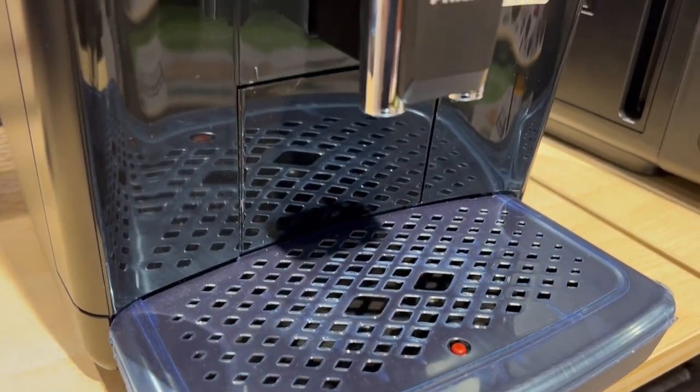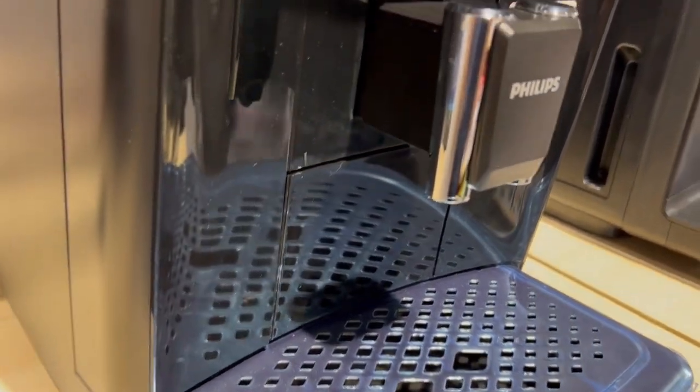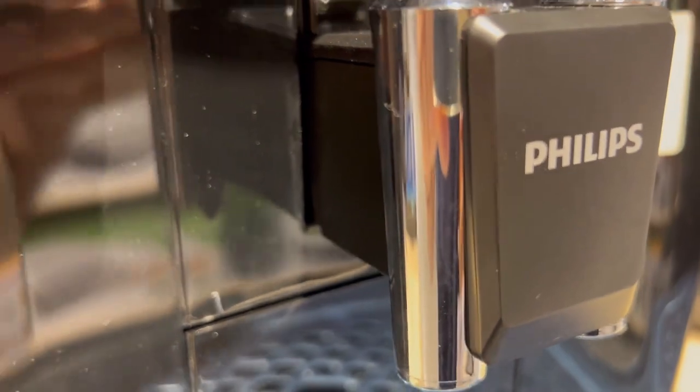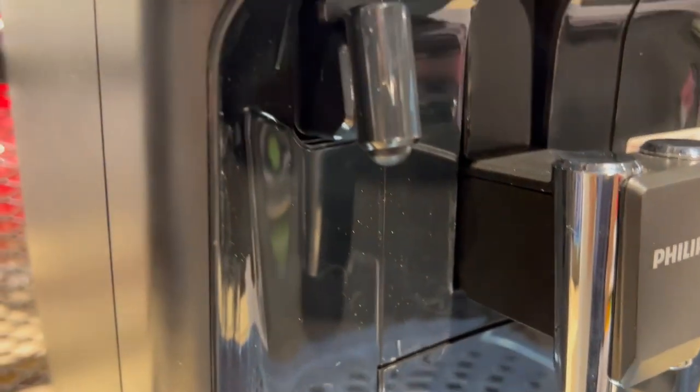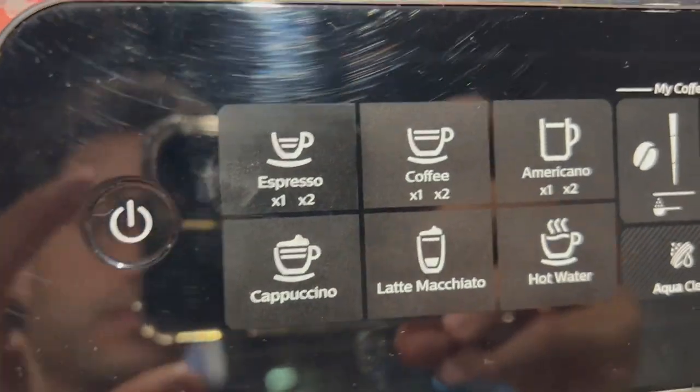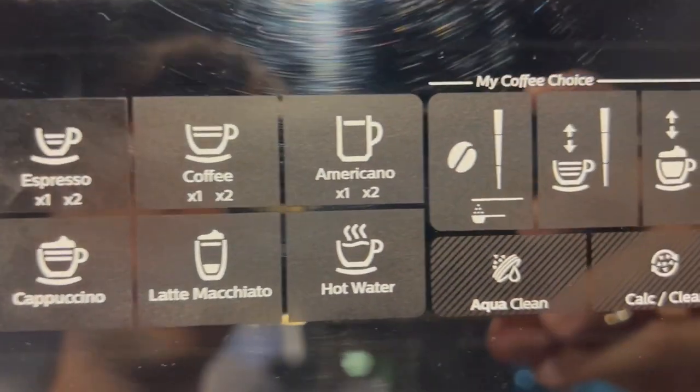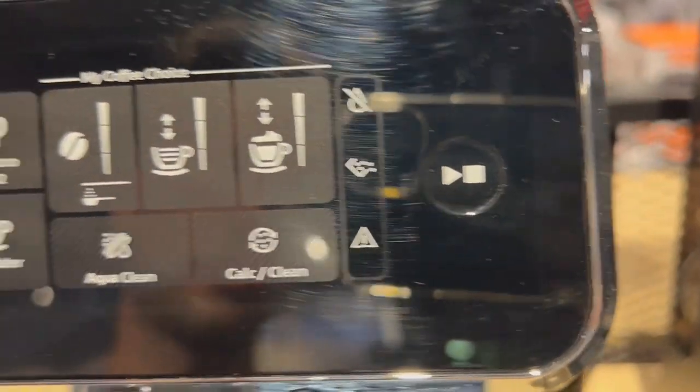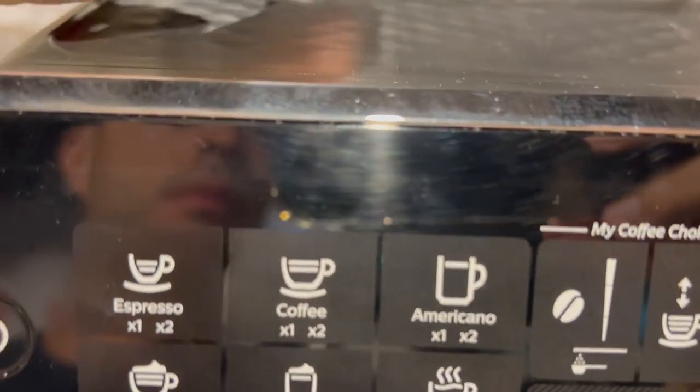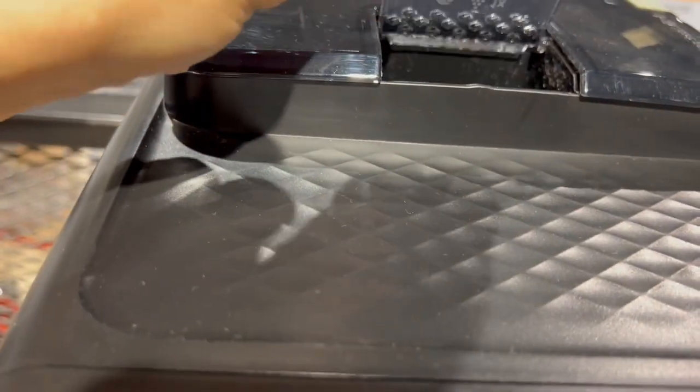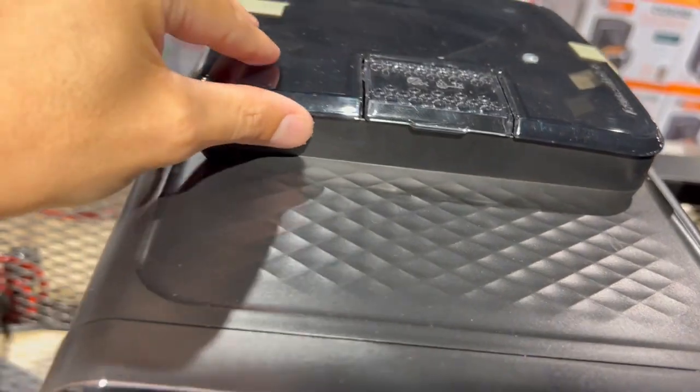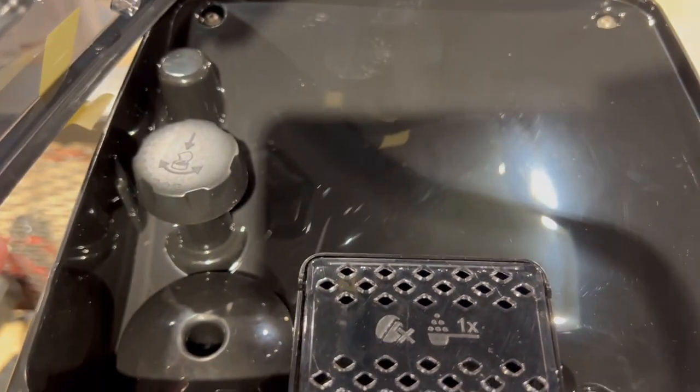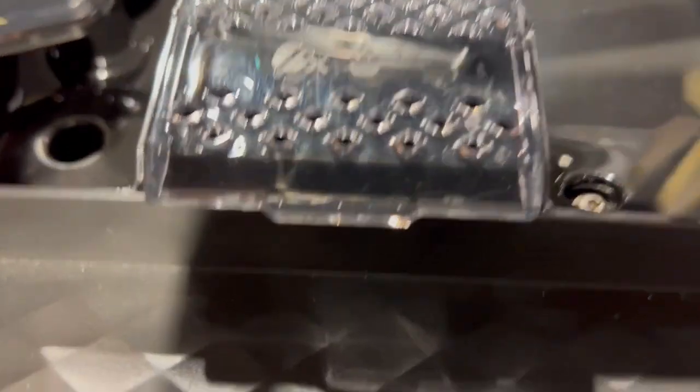Now, for those valuing simplicity and thoughtful design, the Philips 3200 stands out. What sets it apart is the Latte Go attachment, making cappuccino crafting a breeze. Its narrow shape caters to those with limited counter space. In that regard, it's smaller than the Dynamica Plus. So if you have limited space, consider the Philips 3200.